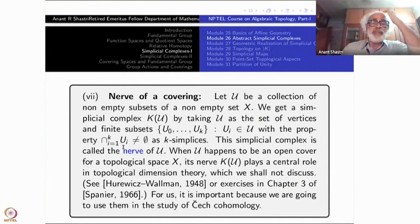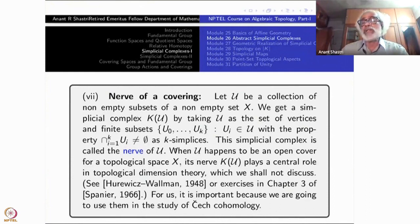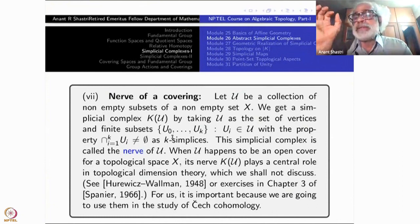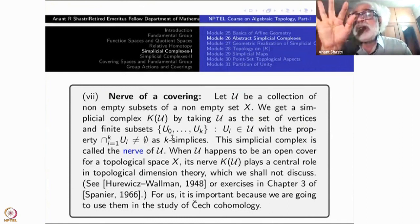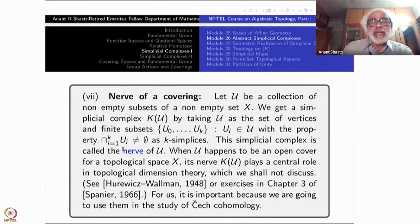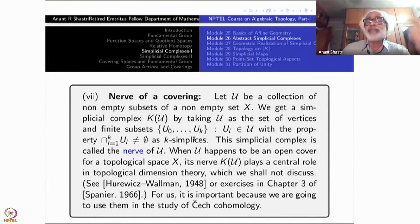If you take the empty set, you would have trouble — that is why each Uᵢ must be non-empty, and then the intersection must also be non-empty; that is the condition for declaring something a simplex. For example, two open sets are vertices; there will be an edge between them provided U₁ ∩ U₂ is non-empty. If it is empty, no edge. If you take a sub-collection, its intersection is also non-empty, so this is automatically a simplicial complex. This simplicial complex is called the nerve of U, written N(U).